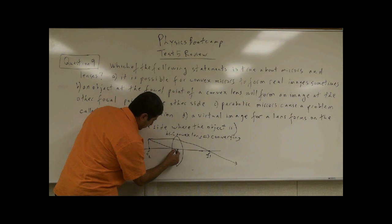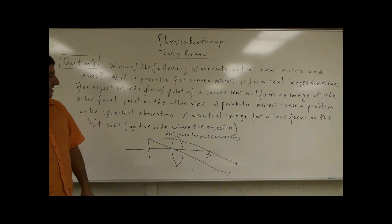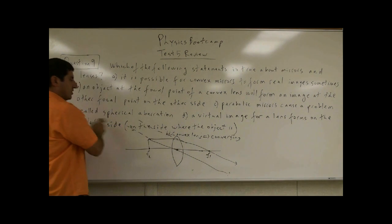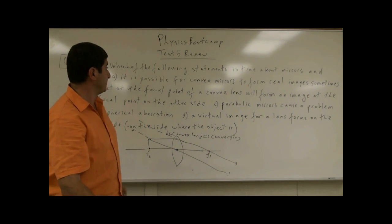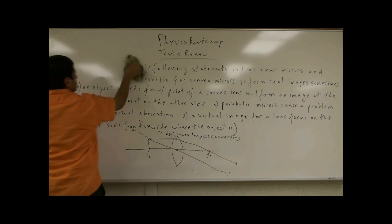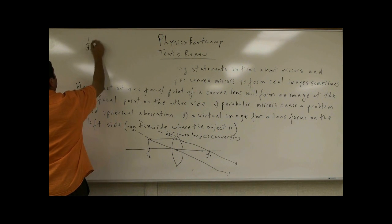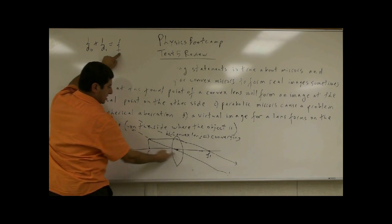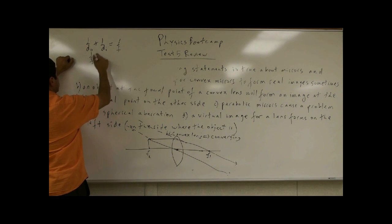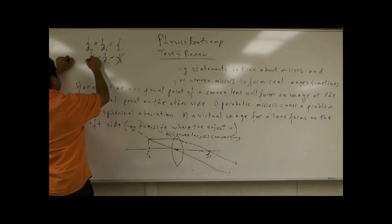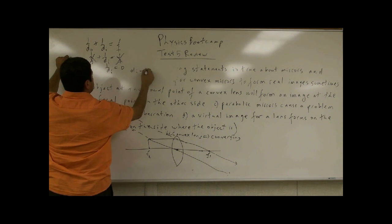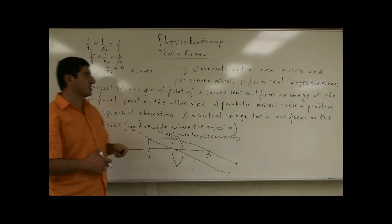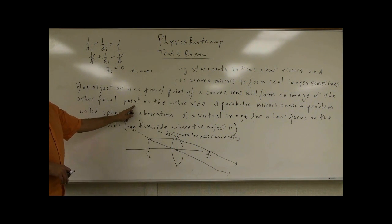A straight beam of light headed for the middle of the lens keeps going straight. What ends up happening is that the two rays never converge on the other side, and if the beam goes back, they never converge on this side either. So there is no image. Using the image formation equation, 1/do + 1/di = 1/f, if do equals f, then 1/f + 1/di = 1/f, which cancels to give 1/di = 0, so di is infinity. It never forms an image. So the statement that an object at the focal point forms an image at the other focal point is false — it should say it forms no image.